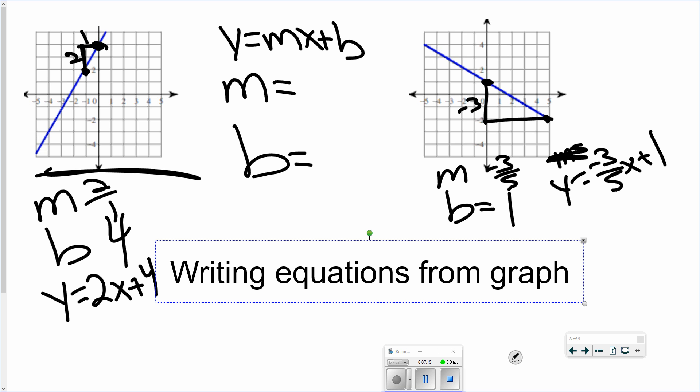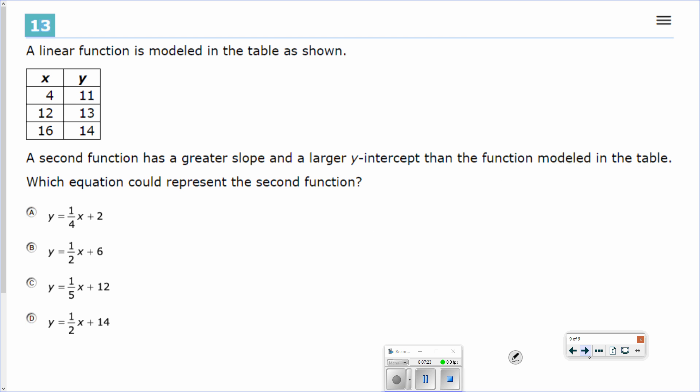So you need an m and you need a b. Now this one, we have to figure out the rate of change and then find one that looks like a greater slope and a larger y-intercept. So we need two things happening. First we're going to start with our slope. So rate of change is we subtract. I've got 14 minus 13, which is going to be 1. 16 minus 12 is going to be 4. So my slope would be 1 fourth.